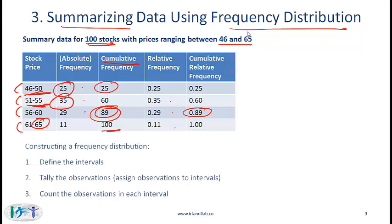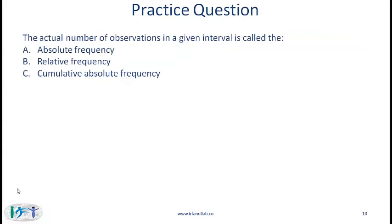Now that you understand what we have done, the formal process for constructing a frequency distribution should be fairly obvious. We first define the intervals, then tally and count the observations in each interval.